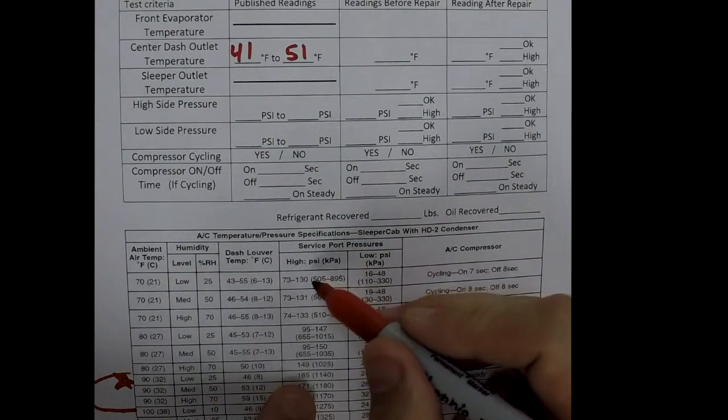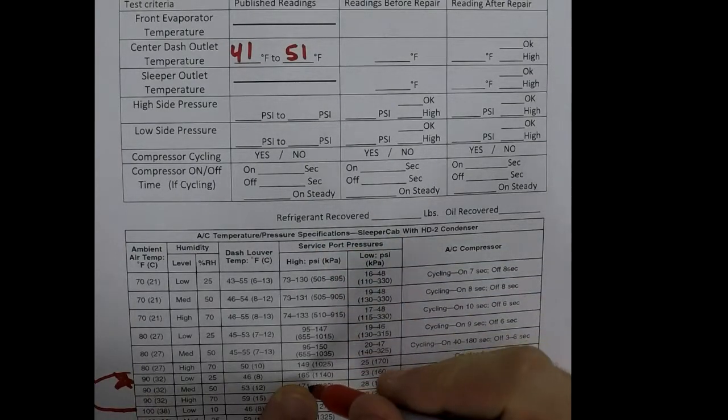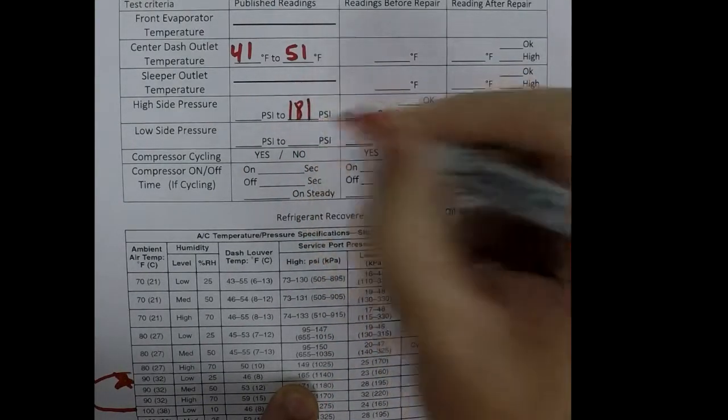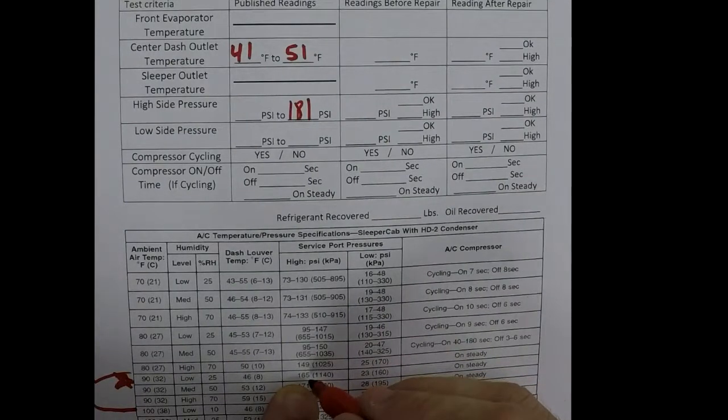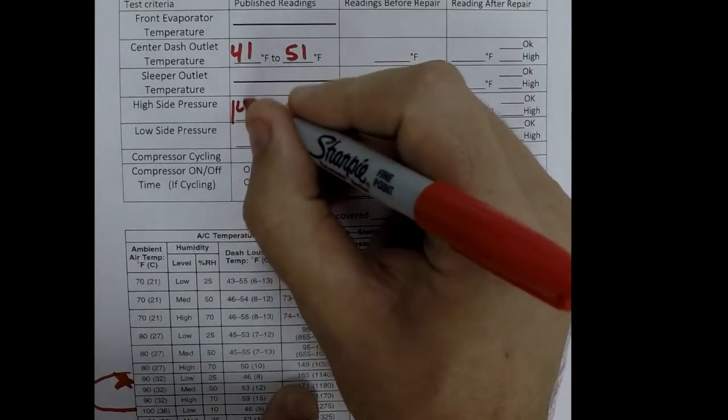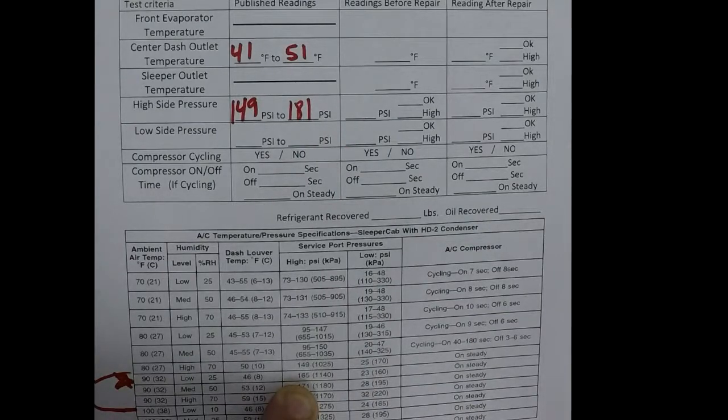46 minus 5 would be 41. So I'm looking for somewhere between 41 and 51 for my dash outlet temperature. All right. Go across. My high side is going to say 165. Again, hard to hit. So I'll just go plus or minus 16 on that because 10% is 16.5. So that is high side. So we'll do a plus 16 first, which would be 181. Minus 16 would be 149. So on my high side pressure, if I'm between 149 and 181, I'd call it good.